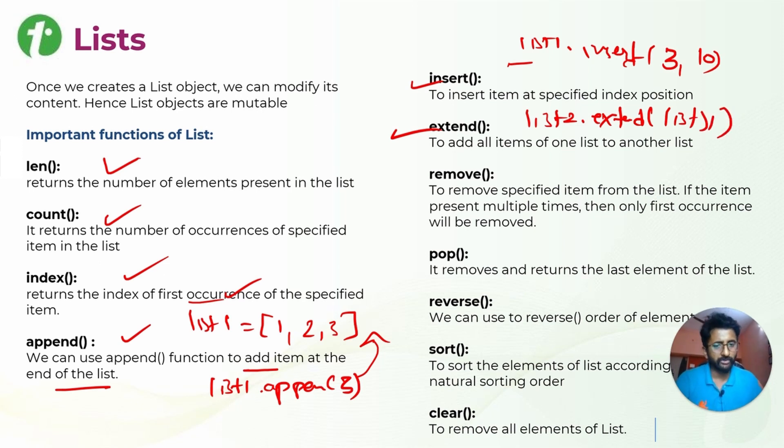You can also remove using the remove method. You can pop the last element of the list using the pop method. This is important - when you are just using pop, it is only taking the last element out of the list.